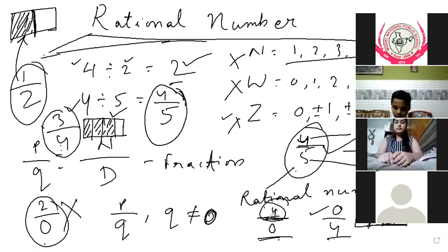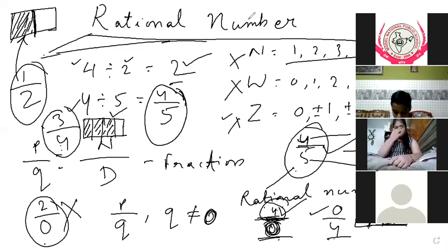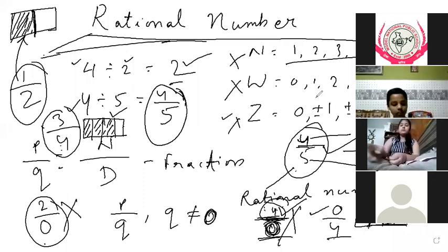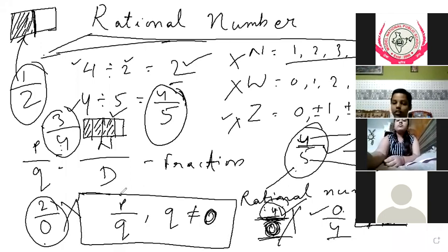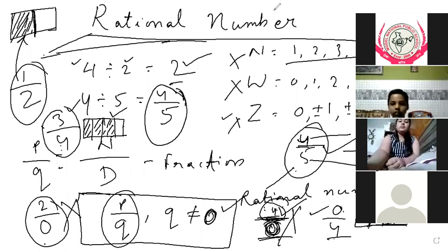4 upon 0 — nothing. Nothing. When zero is in the denominator, nothing is divided, so 4 upon 0 is not possible as a rational number. That is why we say, when we write a rational number, q is not equal to zero. The denominator will never be zero.